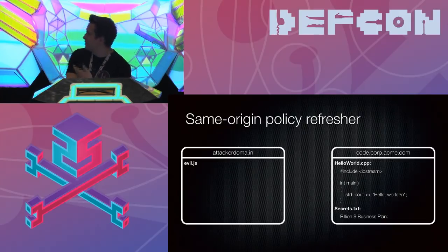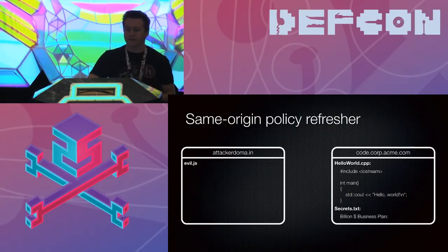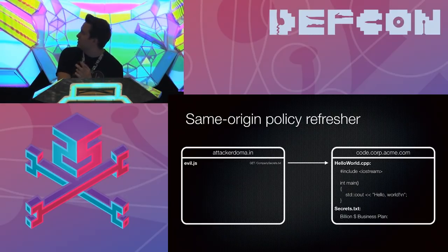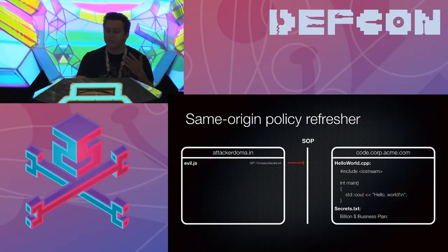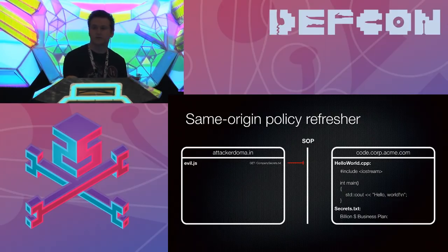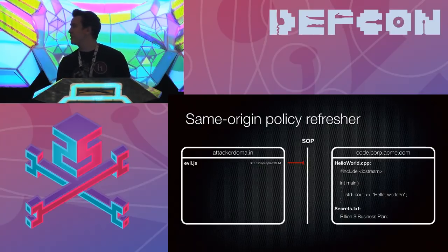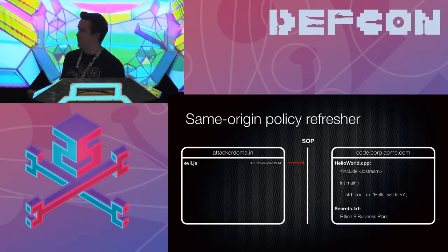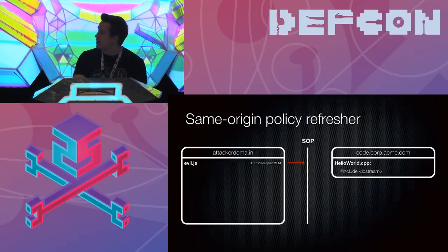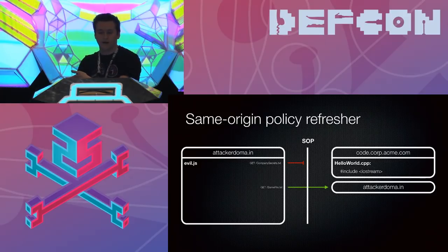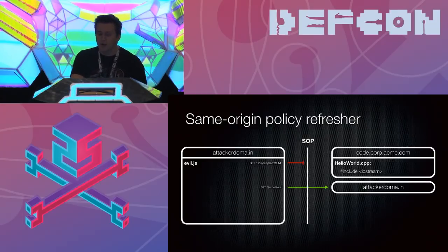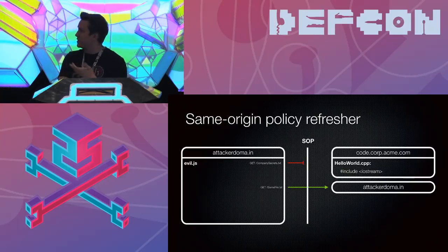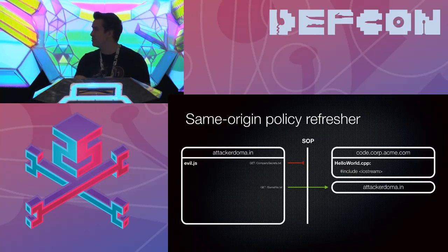What if our attacker domain loads evil.js and evil.js makes a request to code.corp — does the browser just let this through and we get a 200 OK? Of course not. This is blocked by the browser's same origin policy. Same origin policy checks if a request has originated from the same origin as the currently executing script. While our request to code.corp.acme will fail, our request to the same origin attacker domain would succeed. There are exemptions like CORS or JSONP, but same origin policy is actually pretty restrictive — requiring opt-in from the participating server.